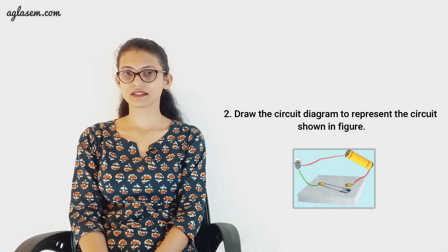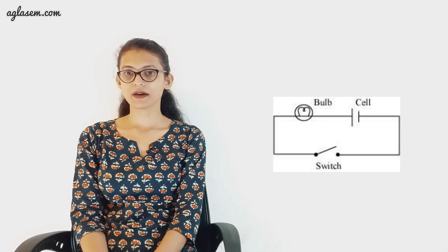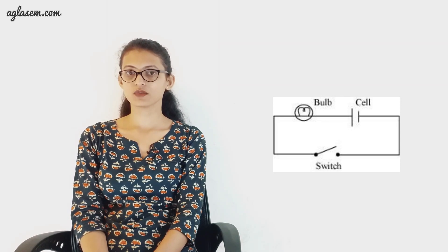Our second question is: draw the circuit diagram to represent the circuit shown in the figure. In the image, we have a bulb, a battery, and a safety pin. Battery and bulb are connected, further bulb and safety pin are in connection, but the battery is not connected to the safety pin. So the safety pin represents a switch that is in off position, making it an open circuit. The circuit diagram to be drawn has a bulb, a cell, connecting wire, and an open switch.